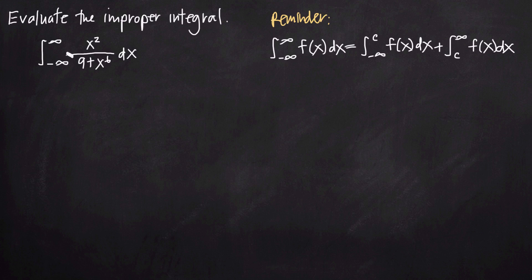We need to recognize that this integral is an improper integral of case type 3, which means that the limits of integration, a to b, are negative infinity to positive infinity. When we have those exact limits of integration, negative infinity to positive infinity, then we're dealing with an improper integral of case type 3.